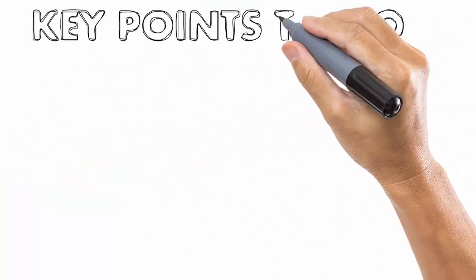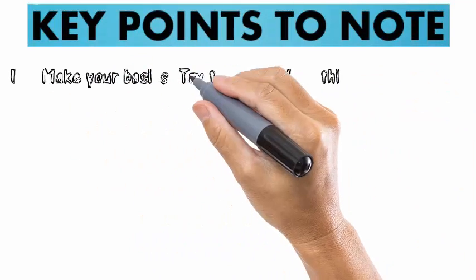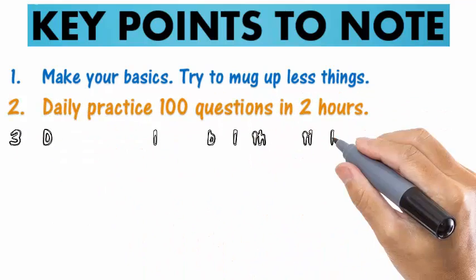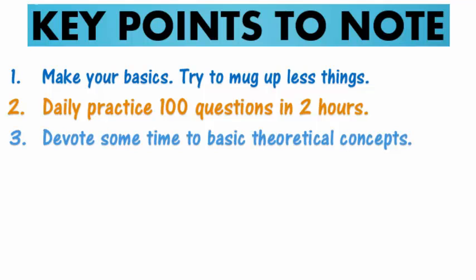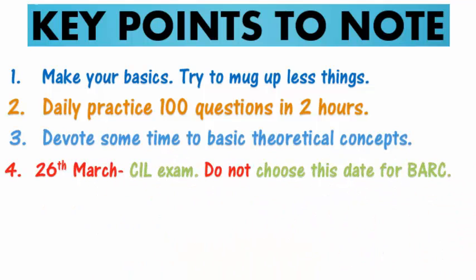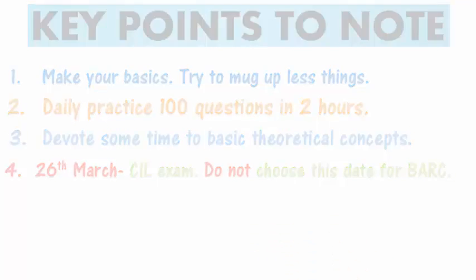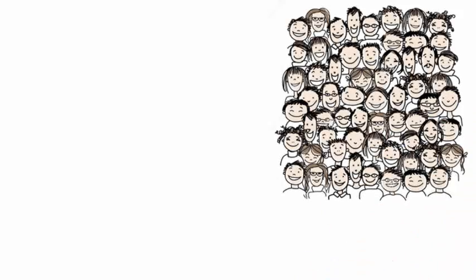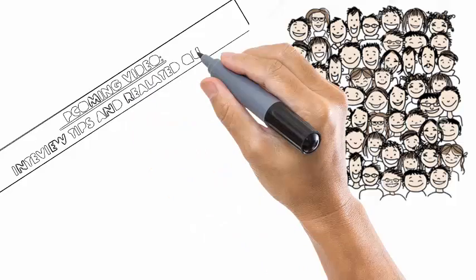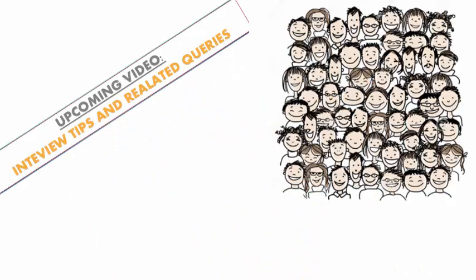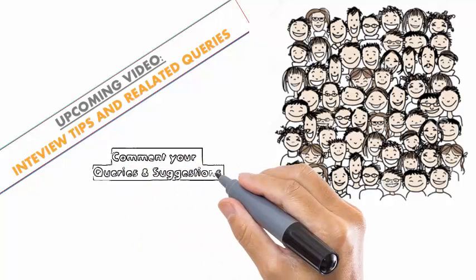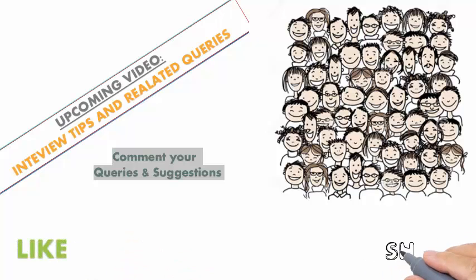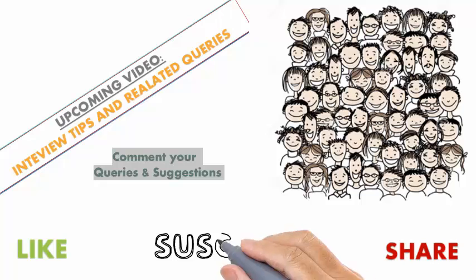Now to summarize: A — work on your basics and keep revising. B — daily practice 100 questions in two hours. C — devote some time to your basic theory concepts also. D — do not choose 26th March as your BARC exam date if you have filled the CIL form also. I am one among you guys — I just made this video to share whatever I have experienced. Very soon I will upload a video regarding a brief discussion about the BARC interview. If I skipped anything, your suggestions and queries are most welcome in the comments below. Like this video, subscribe, and share it with your friends also. Stay tuned. Thank you.